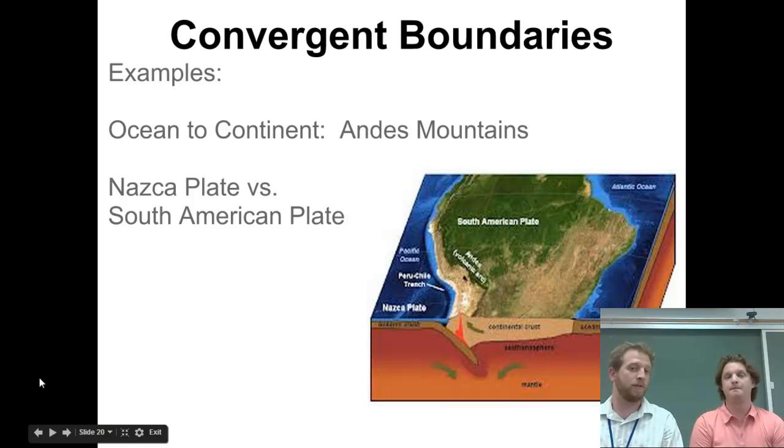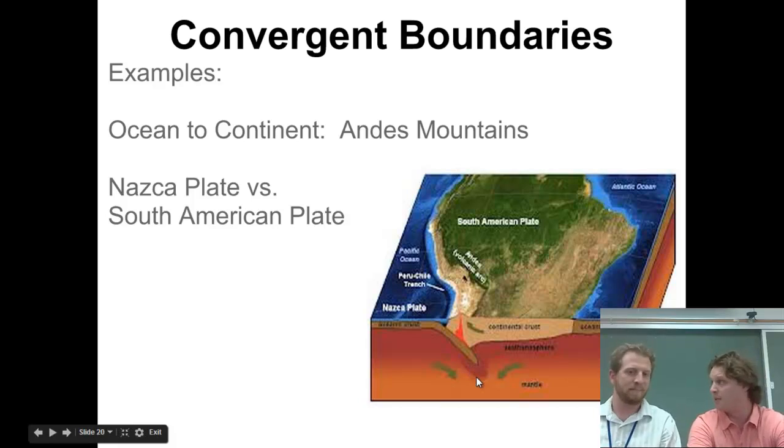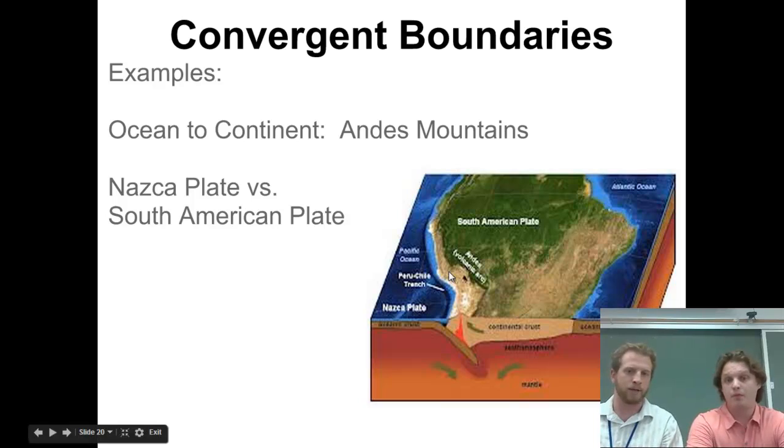Here's an example of a convergent boundary - the Andes Mountains. The South American plate is running into the Nazca Plate, which is just off the coast in the Pacific. The Nazca Plate is oceanic and the South American Plate is continental. Since the Nazca Plate is thinner and more dense, it goes underneath the South American Plate. As it goes underneath, temperature increases, the rock melts and rises, forming the huge Andes mountain range along the western coast of South America.